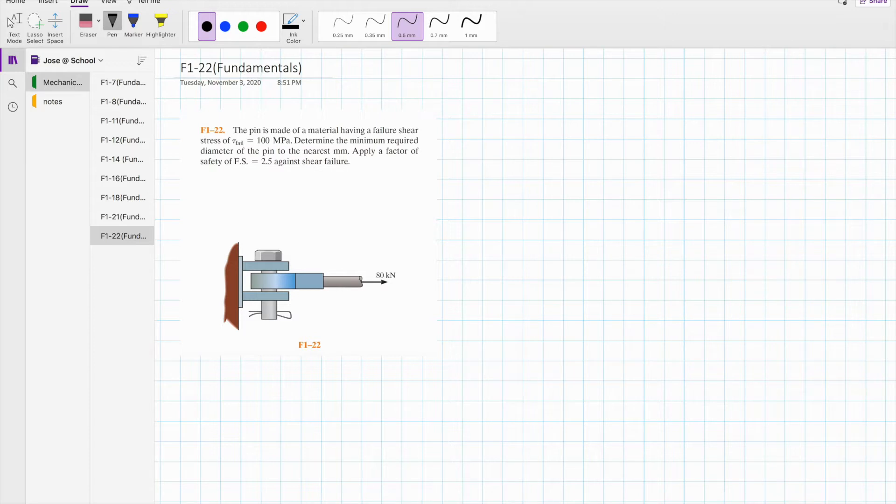In this video we're going to focus on the 22nd fundamental problem from chapter 1. The pin is made of a material having a failure shear stress of 100 MPa and we are to determine the minimum required diameter of the pin to the nearest millimeter. We are to apply a factor of safety of 2.5 against shear failure.